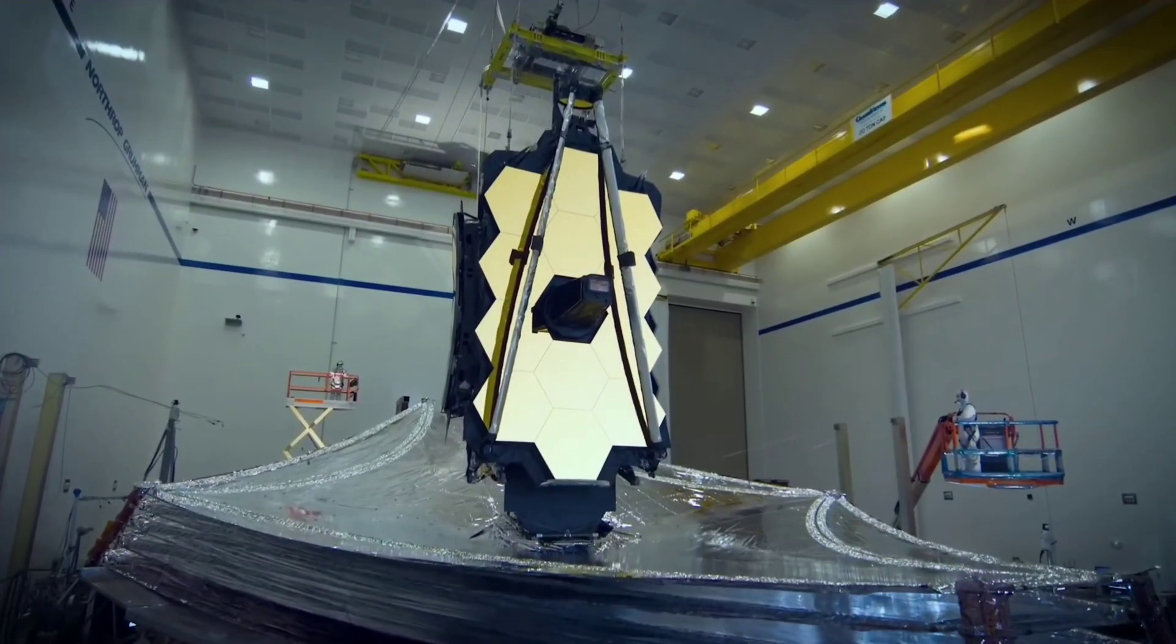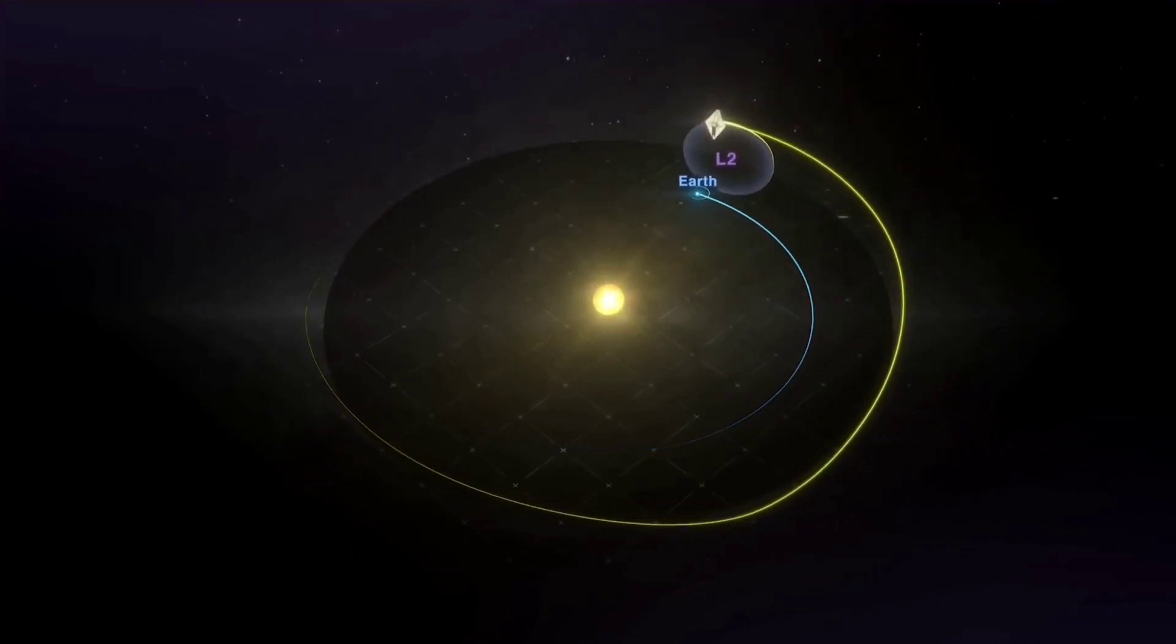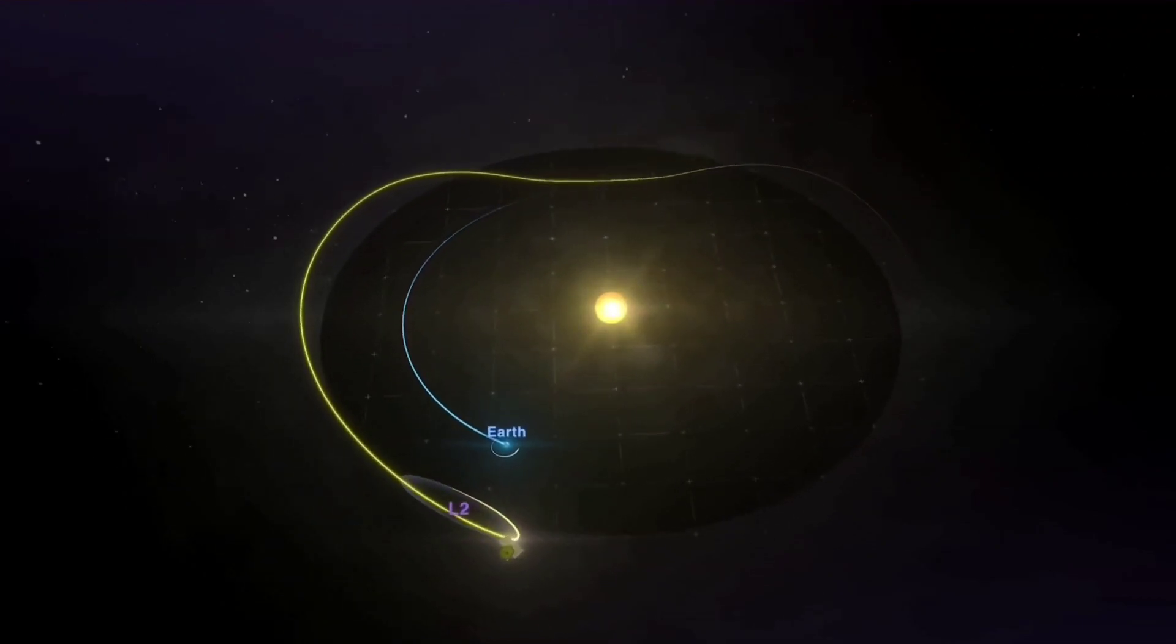The James Webb Space Telescope has successfully inserted itself into its orbit at the Earth-Sun Lagrange point 2, doing so at 2:05 p.m. EST on January 24, 2022.